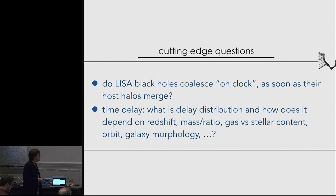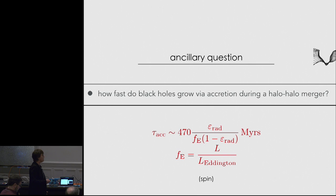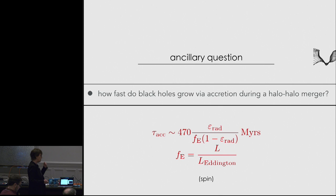Do black holes coalesce on clock as soon as their host halos merge? There is an intrinsic time delay and we would like to know the delay distribution and how it depends on redshift, black hole masses, mass ratio, gas versus stellar content, orbits, and galaxy morphology. We also want to know how fast black holes grow via accretion during a halo merger. The accretion timescale can be of the order of 50 million years for a radiative efficiency of 10% at Eddington luminosity, and this may affect the value of the spin during clustering.